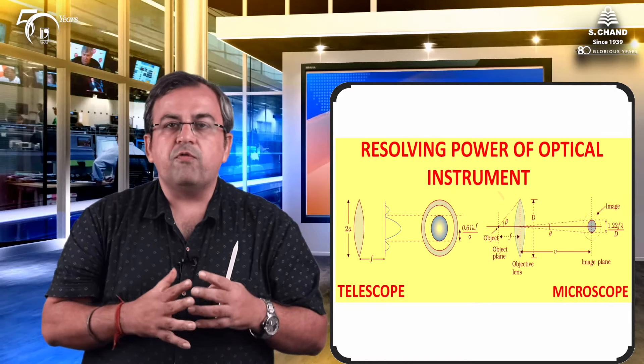We are using various optical instruments: prism, telescope, microscope, and diffraction grating among others. The resolving power of such an optical instrument is defined as its ability to just resolve these two spectral lines which we are observing.